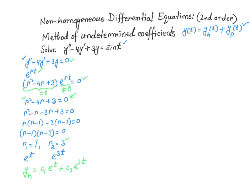Now we find a particular solution for the non-homogeneous case, where the right-hand side is sine of t. Since this is a trig function and the derivative of sine is cosine, we assume that our particular solution y_p is going to look like A times sine of t plus B times cosine of t.